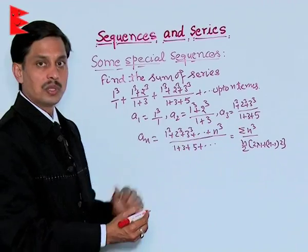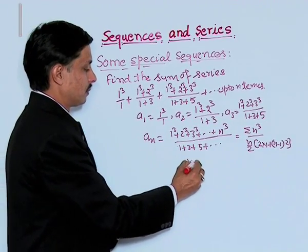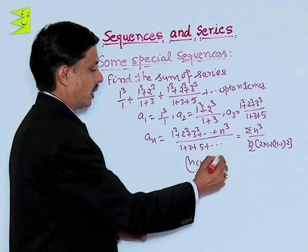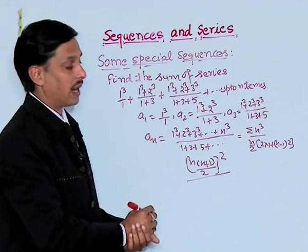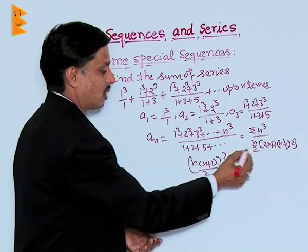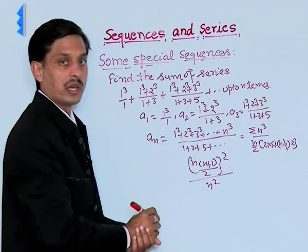Sigma n cube is n into n plus 1 upon 2 whole square divided by this will be 2, and 2 gets cancelled. This 2 will be cancelled by this, so we are left with n square.